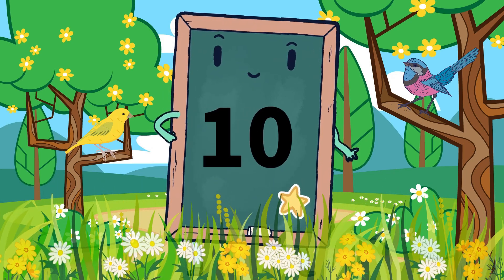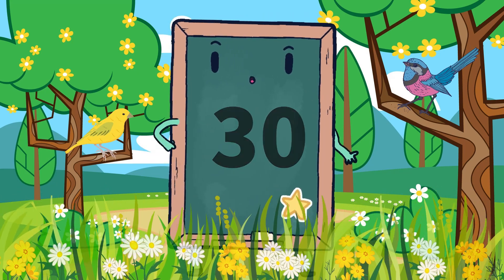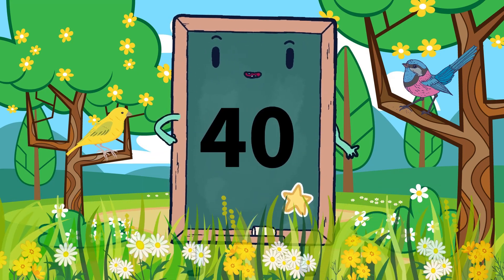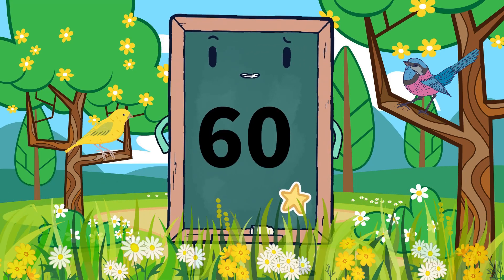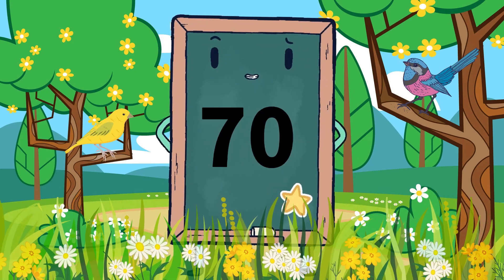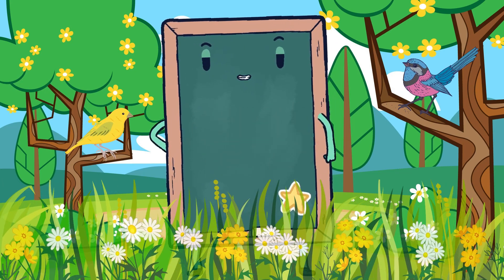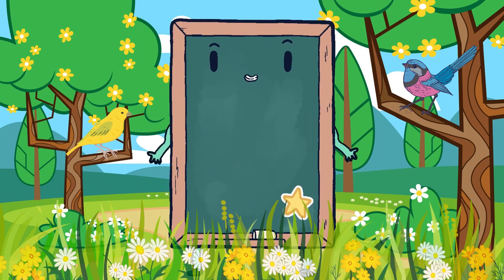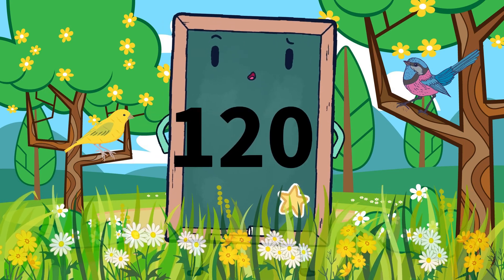10 ones are 10, 10 twos are 20, 10 threes are 30, 10 fours are 40, 10 fives are 50, 10 sixes are 60, 10 sevens are 70, 10 eights are 80, 10 nines are 90, 10 tens are 100, 10 elevens are 110, 10 twelves are 120.